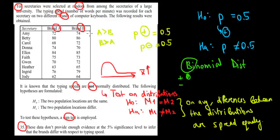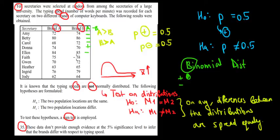Let's count how many positive and negative differences we actually have. Taking the difference between brand A and brand B — we're not interested in the values, just the direction of the differences. 72 minus 74: negative. 80 minus 86: negative. 68 minus 72: negative. 74 minus 70: positive. 84 minus 85: negative. 75 minus 73: positive. 70 minus 72: negative. 63 minus 65: negative. 76 minus 79: negative. 62 minus 64: negative.